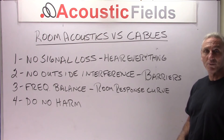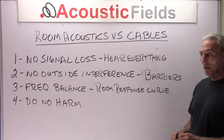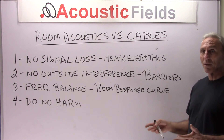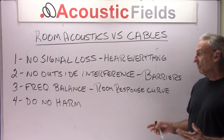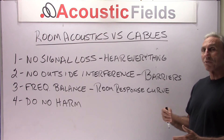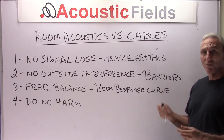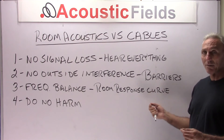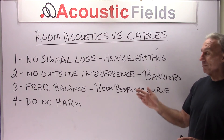Obviously in our room we do the same thing. We're after a balanced response curve. We're going to need low frequency absorption, middle and high frequency absorption, and middle and high frequency diffusion. These are our insulation, if you will — our connectors so to speak on the room side — to get that frequency balance, which is what we're after in room acoustics as well.